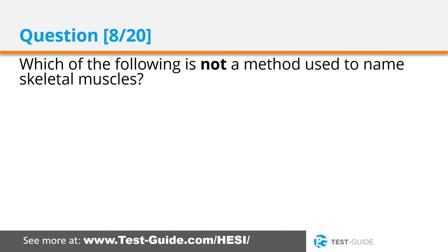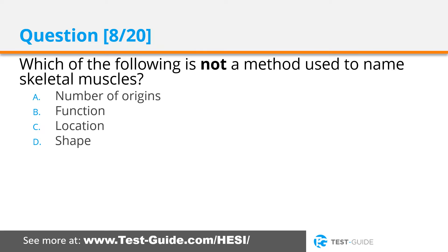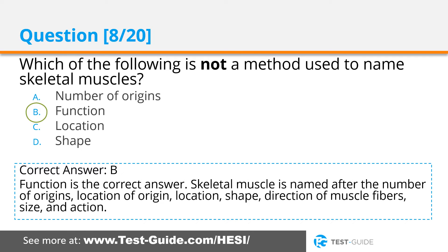Question eight: Which of the following is not a method used to name skeletal muscles? Options: number of origins, function, location, shape. Correct answer B. Function is the correct answer — it is not used to name skeletal muscles. Skeletal muscles are named after number of origins, location of origin, location, shape, direction of muscular fibers, size, and action.